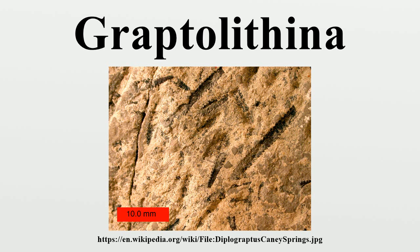Since the 1970s, as a result of advances in electron microscopy, graptolites have generally been thought to be most closely allied to the pterobranchia, a rare group of modern marine animals belonging to the phylum hemichordata. Comparisons are drawn with the modern hemichordates Cephalodiscus and Rhabdopleura. Cephalodiscus numbers about 18 species and was first discovered in 1882.